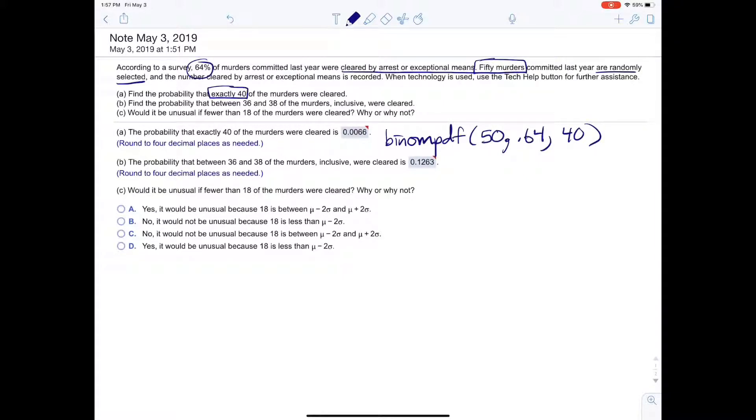Part B, it says it wants the probability that between 36 and 38 of the murders were cleared. That's a little bit tougher to do on binomial. You would actually have to do it the following way. You do binomial. So really, you've got to think about it like there's 0, 1, dot dot dot, 35, 36, 37, 38, dot dot dot, all the way to 50, actually.